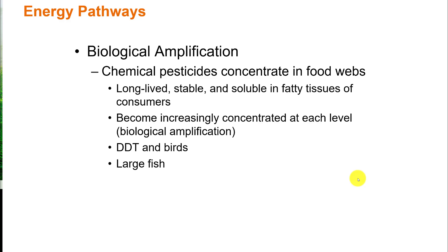Going back to energy pathways: biological amplification is the concept that chemical pesticides concentrate in food webs. Long-lived, stable, and soluble types of chemicals collect in the fatty tissues of consumers and become increasingly concentrated at each trophic level. This is biological amplification.